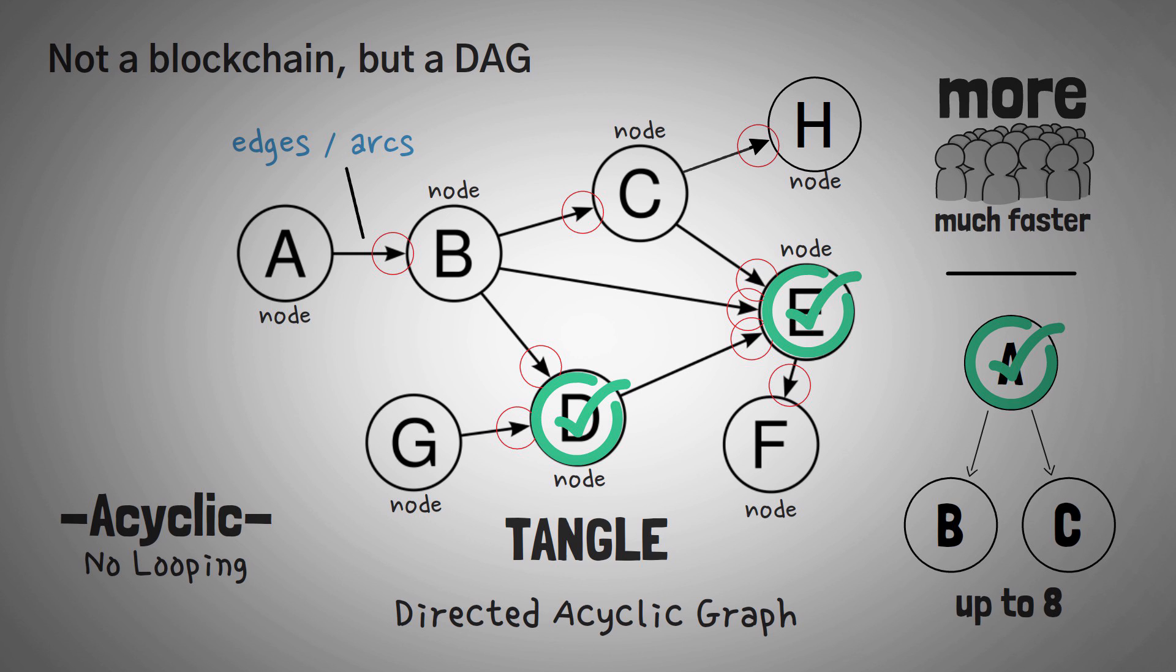Instead of proof of work or proof of stake, IOTA uses DAG technology to arrive at an agreement on all of the transactions inside their Tangle. Right now, the Tangle can handle up to a thousand transactions per second, which is much more than Bitcoin and Ethereum.